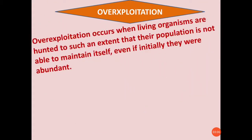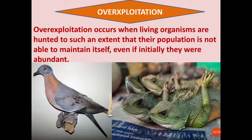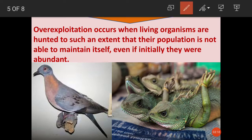Another threat is over exploitation. Over exploitation occurs when living organisms are hunted — generally for their flesh — to such an extent that their population is not able to maintain itself. A very good example is the Passenger Pigeon, which was hunted for food and is now extinct. They were found in North America.